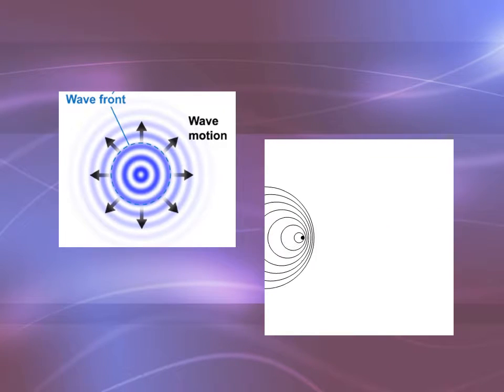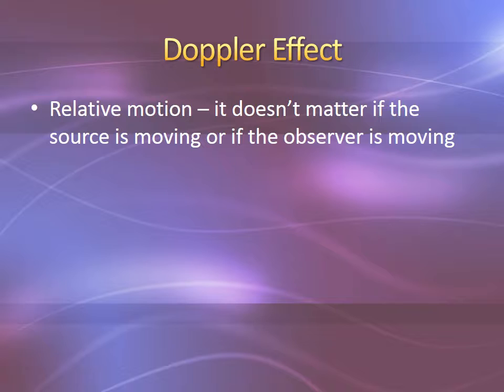So there's a name for this. It's the Doppler effect, and there must be motion. It has to be relative motion. It doesn't matter if the source is moving or if the observer is moving.